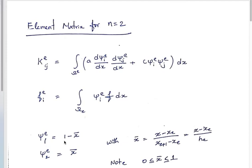For psi_{e1} the root is 1, giving the function 1 minus x_bar. For psi_{e2}, it must be 0 at local node 1 and 1 at local node 2, so it equals simply x_bar. Thus the interpolation functions for a two-noded line element are 1 minus x_bar and x_bar. The best approach to evaluate K_{eij} and f_{ei} is to perform the integration, ideally using a mathematical code.